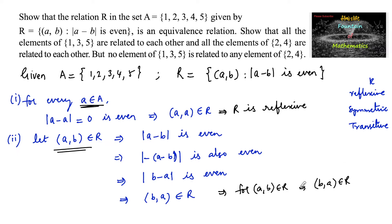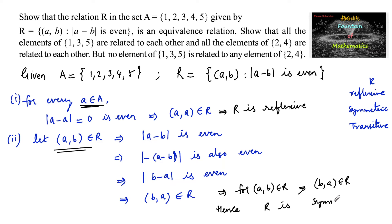For (a, b) belongs to R, we have (b, a) belongs to R, and hence we can say that relation R is symmetric.